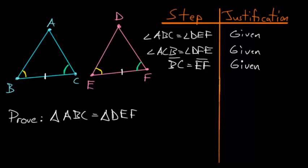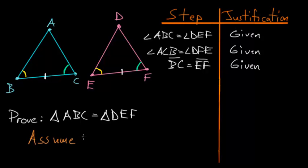To start this proof, since we're trying to show that all side lengths are equal, let's assume that sides AB and DE are not equal, which implies one would have to be bigger than the other. Let's say AB is bigger than DE — the same argument would follow if we chose it the other way around.